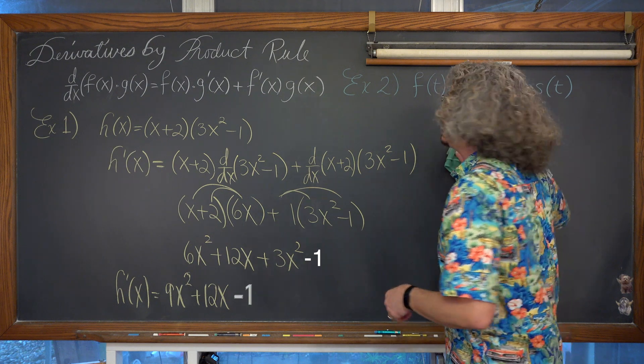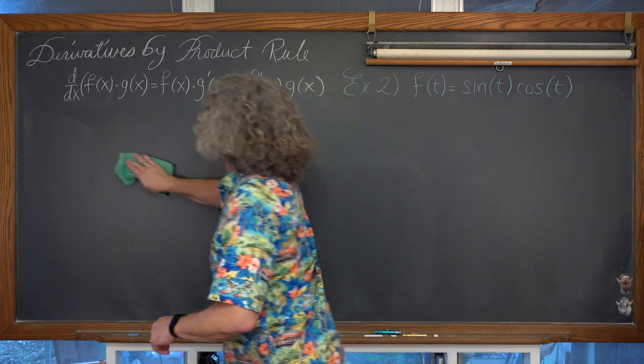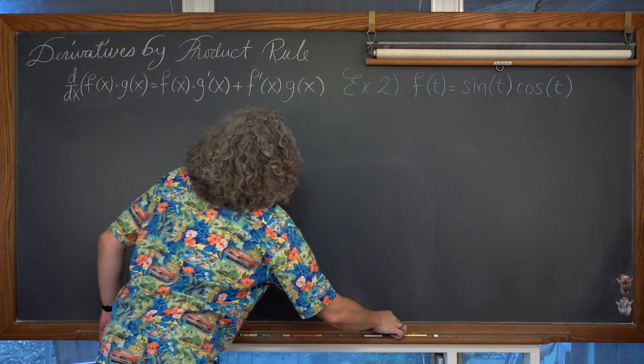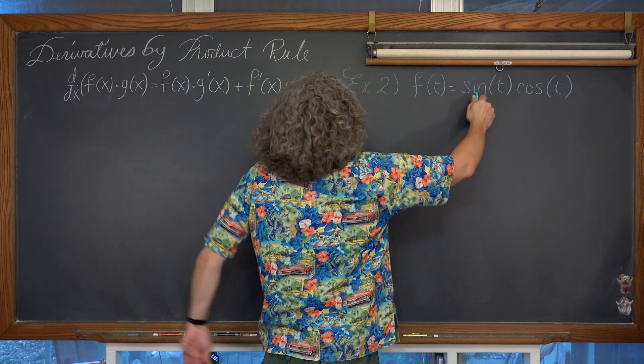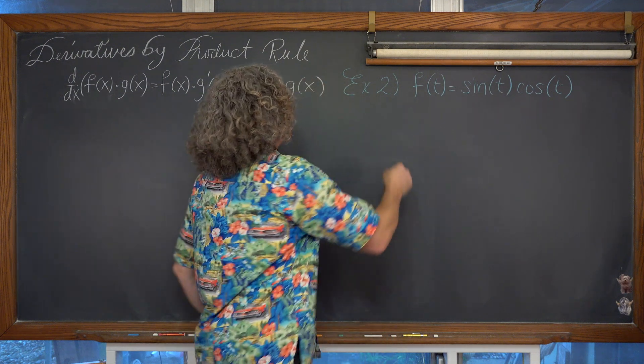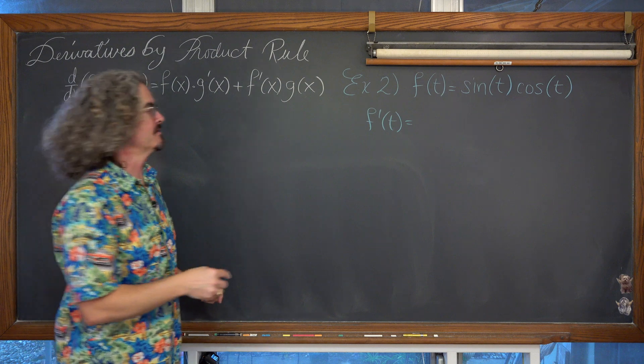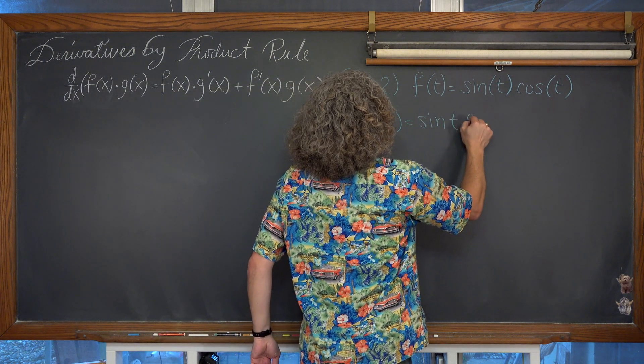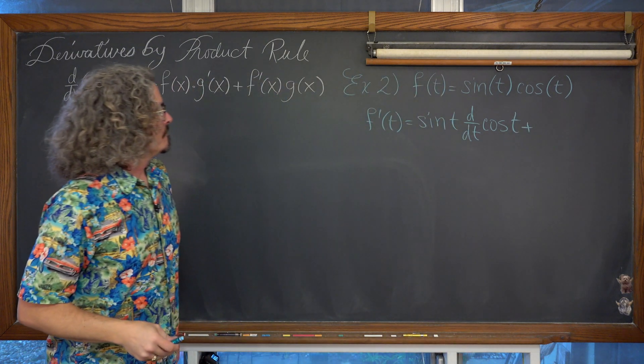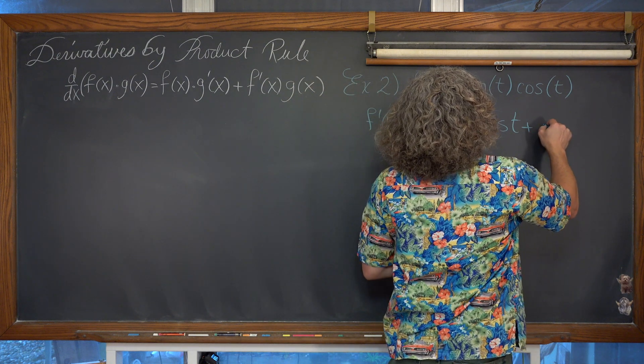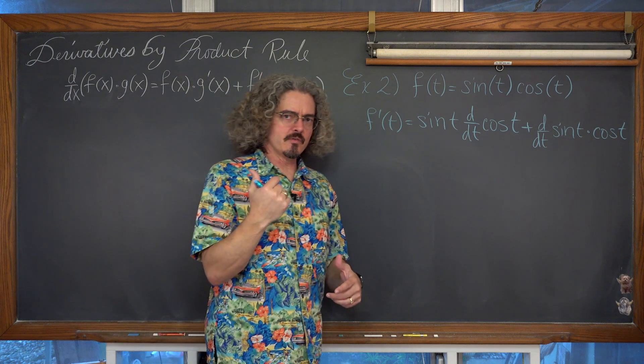Our second example has us looking at f(t) = sin(t)cos(t), a product of functions. Our first function is sine, our second function is cosine of t. So f'(t) is going to be the first function times the derivative of the second function: sin(t) times the derivative with respect to t, not x, of the cosine of t, plus the derivative of the first function, d/dt of sin(t), times cos(t).